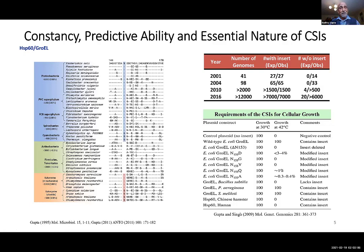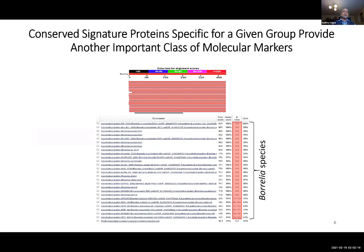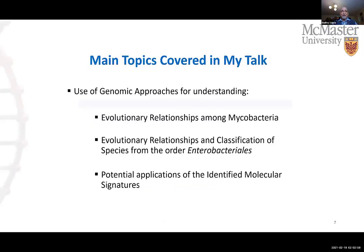This indicates that these inserts or deletions play important functions in the organisms where they are found. This slide gives an example of conserved signature proteins. Unlike the indel, where the protein in question is present in different organisms, these signature proteins are uniquely found in a particular group of organisms. I'm showing you the results of BLAST searches with a protein which is only found in Borrelia species — all significant BLAST hits are for Borrelia species, and no other significant hits are observed. So this protein is entirely uniquely found in Borrelia species.